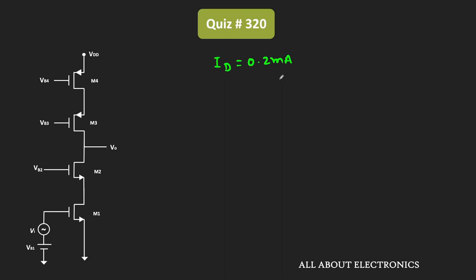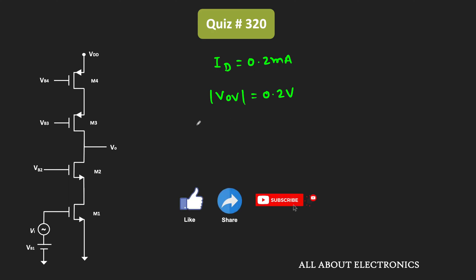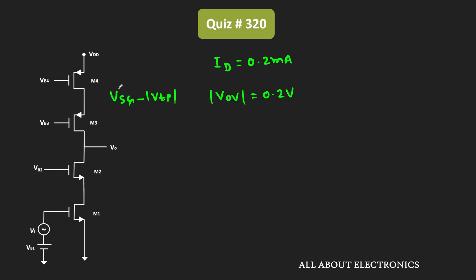Apart from that, we have been given that the overdrive voltage VOV is equal to 0.2 V. For nMOS transistors, this overdrive voltage is equal to VGS − VT, while for PMOS transistors it is equal to VSG − |VTP|. In general, we can say this overdrive voltage VOV equals VGS − VT, and for all transistors it is equal to 0.2 V.